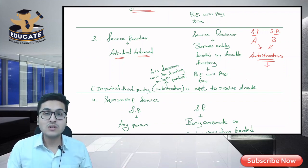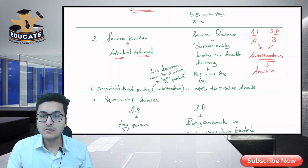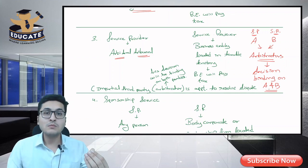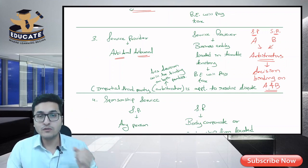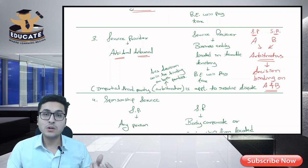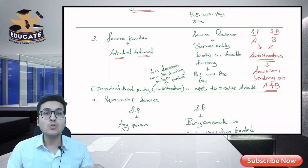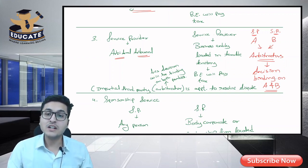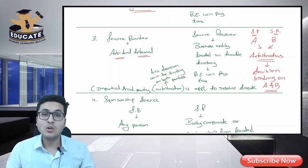These arbitrators will hear the case and their decision will be binding on both Mr. A and Mr. B. So this is a commercial nature dispute — Mr. A and Mr. B don't want to take it to court, they want to resolve it outside. They make an arbitration agreement, appoint arbitrators who are experts in the relevant field. Both parties appoint them by mutual consent. The arbitrators hear the case, pass a decision, and that decision is also valid in the court of law.